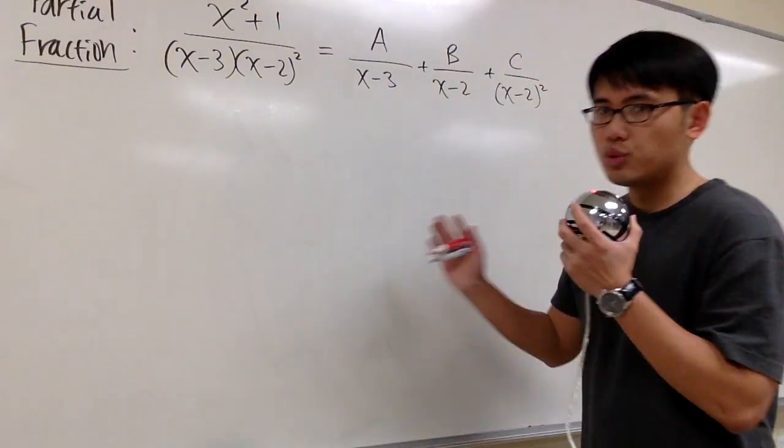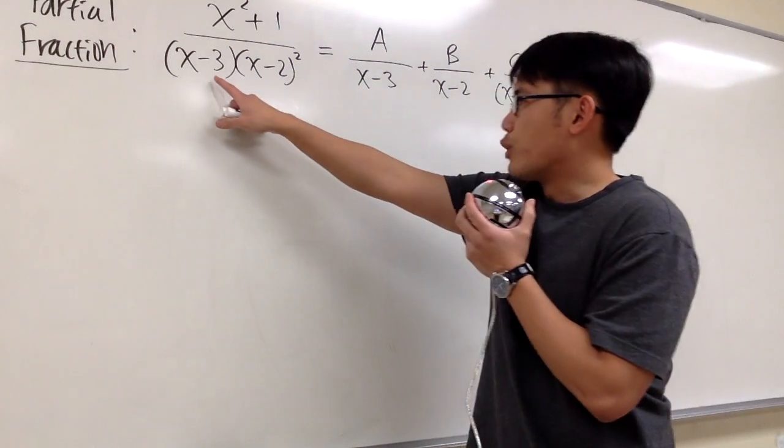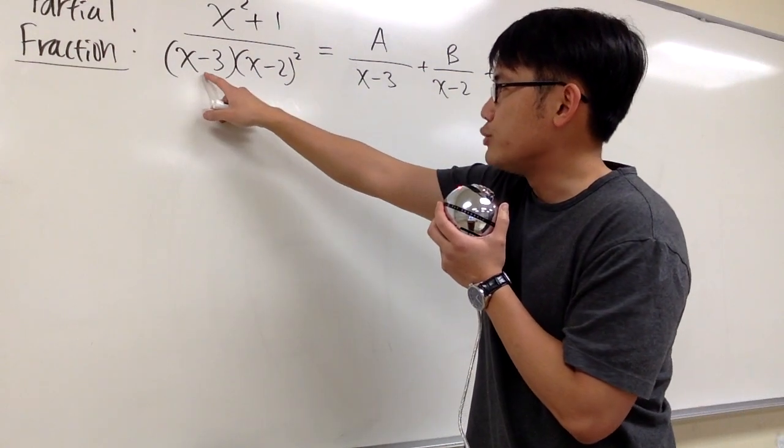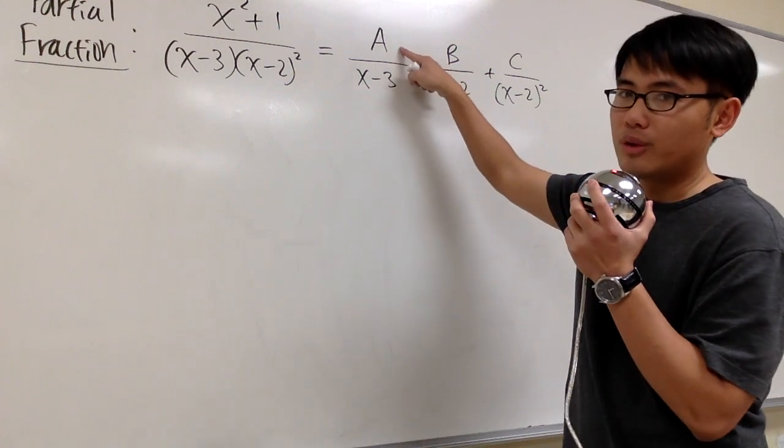Now let's talk about how we can possibly shorten our computations with the cover-up method. Look at the original denominator, which we have x minus 3. Because of the x minus 3, it's underneath the A, we know we can use the cover-up for A.